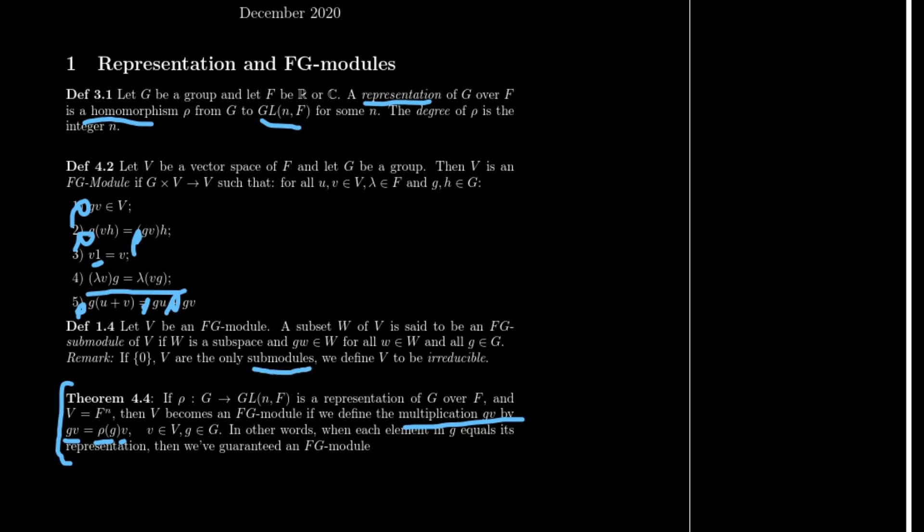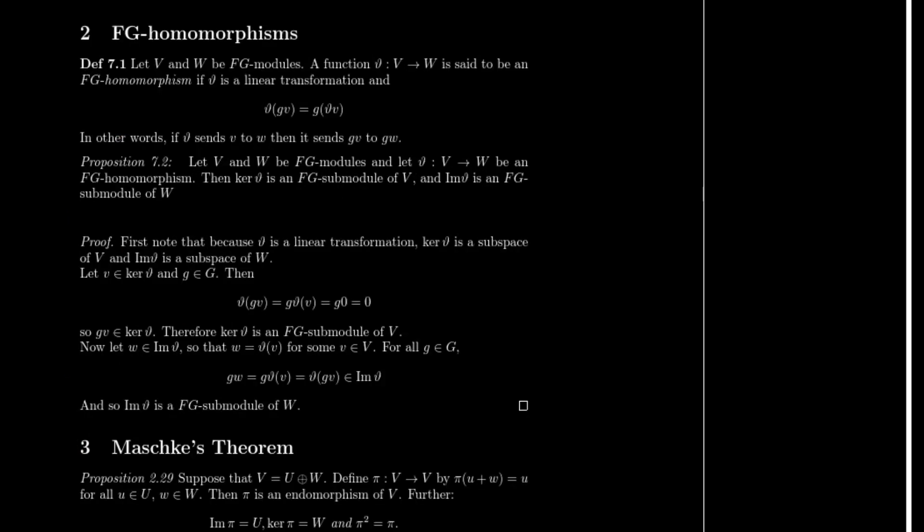Now that we've kind of spelled out what a module is, let's return to this idea of a submodule. One really interesting thing we're able to do is discover what a submodule is by identifying a special FG homomorphism. To back up a little bit, we're going to define an FG homomorphism as a linear transformation that goes from one FG module to another by this certain rule. We're going to call this a little simple θ here. So θ takes the group element times the vector space to the group element times the θ of that vector space, which is just another way of saying that θ is going to send V to W whenever it sends GV to GW.